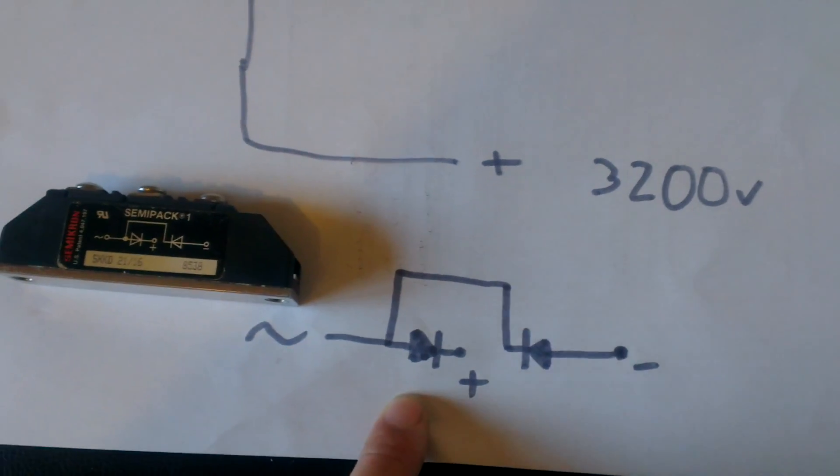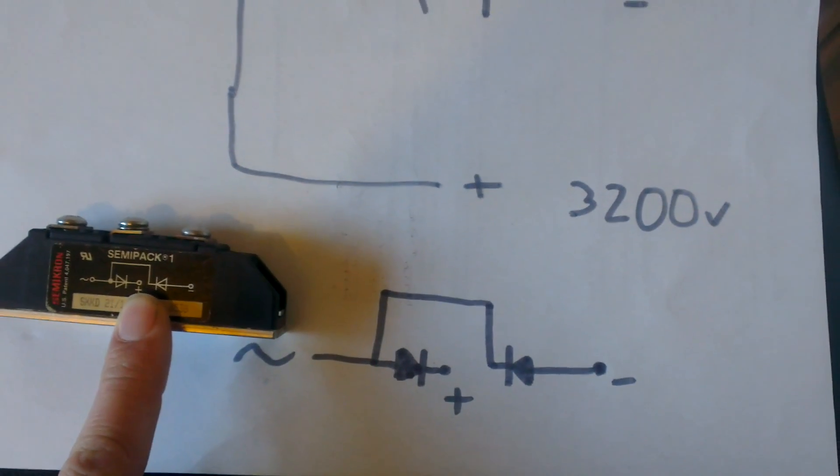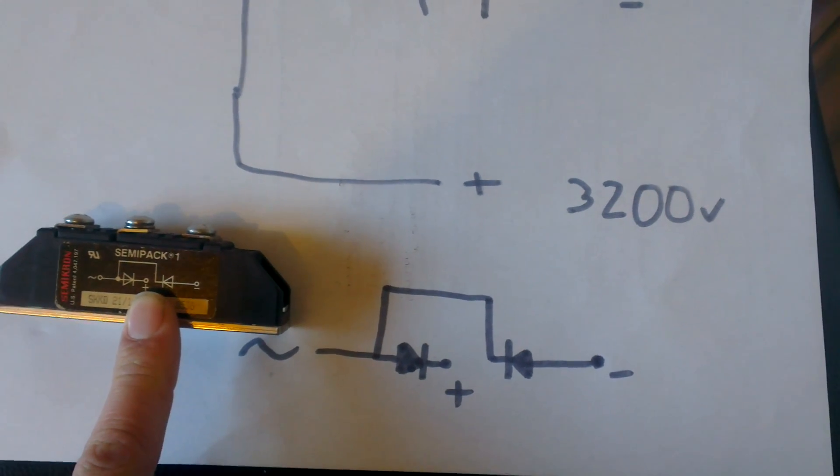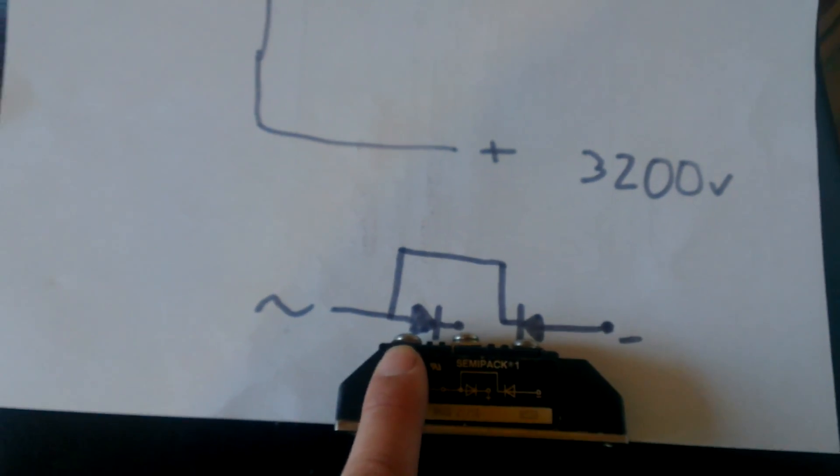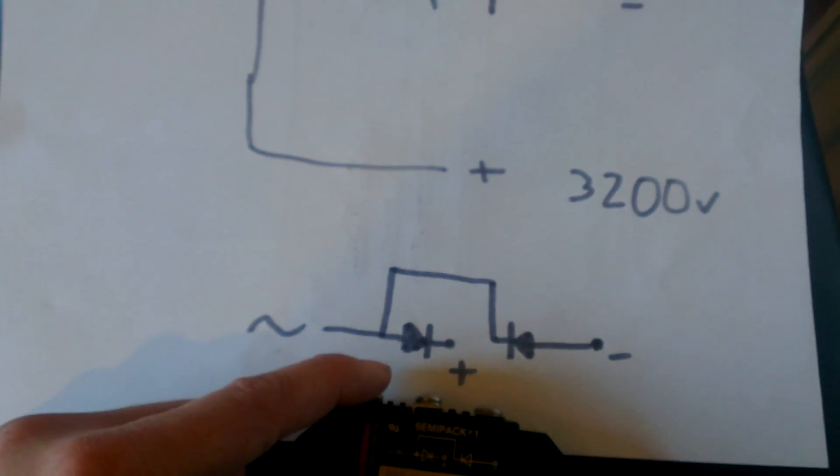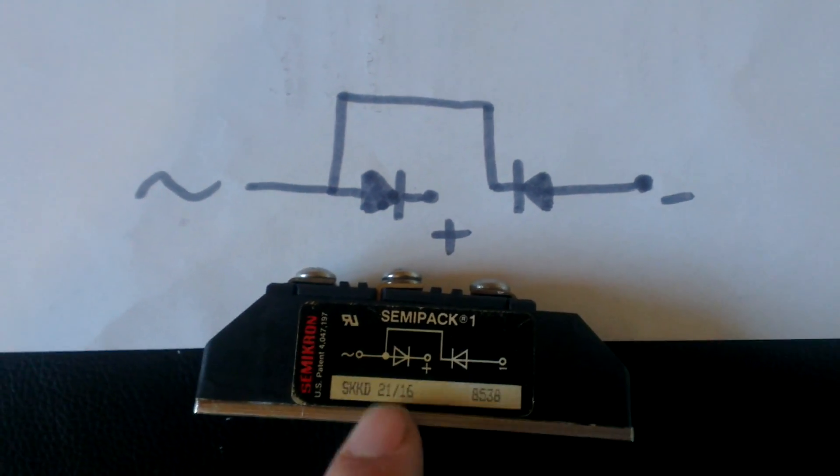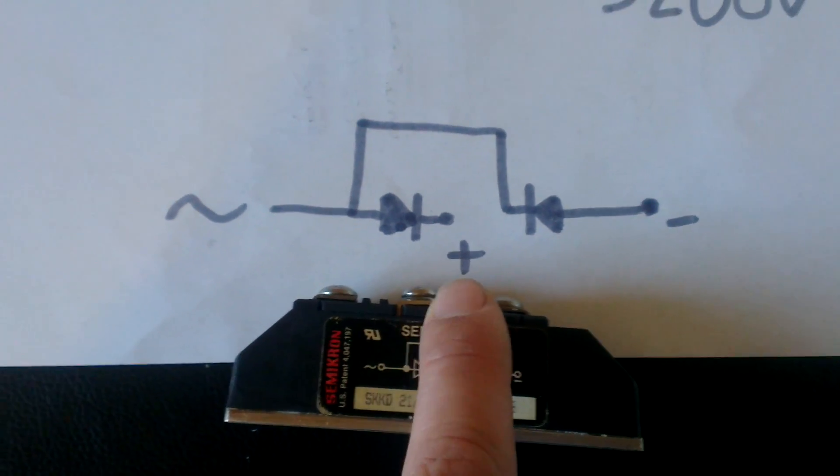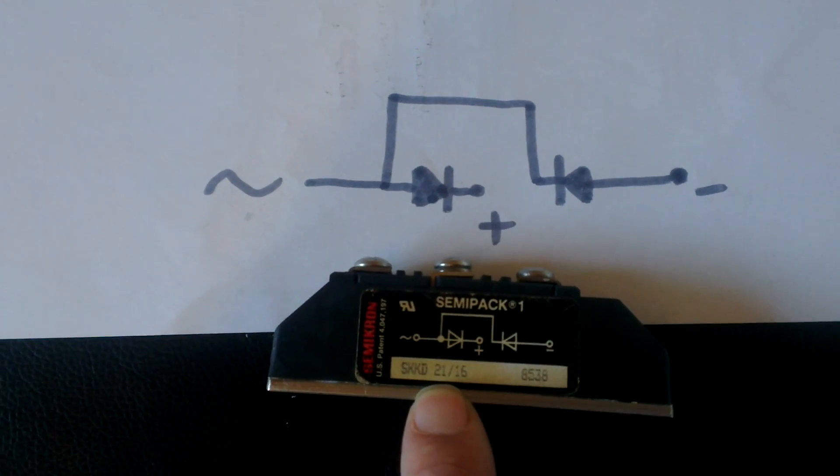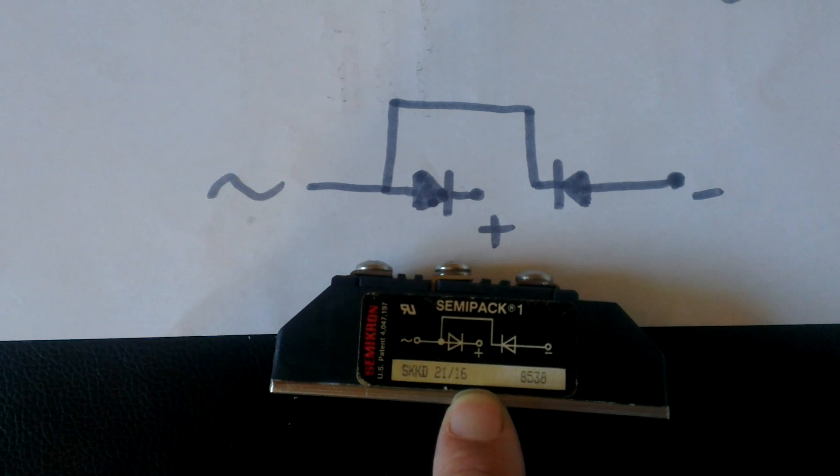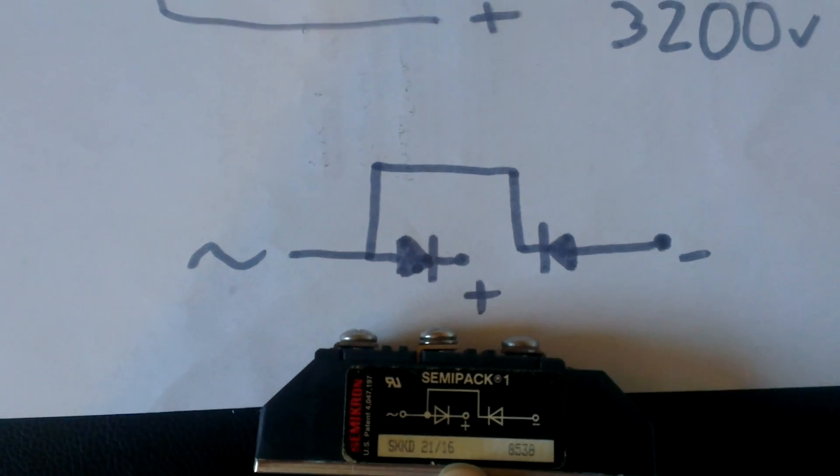This is the symbol on the side of this component. In there, there are two diodes and it would be classed as a half-wave rectifier. Basically, you've got this pin here where you put one line of AC in. You've got this here where you'd get your plus, and this one here where you'd get your minus. Now this is a 21 amp, 1600 volt SEMIPACK.